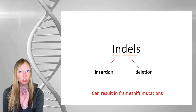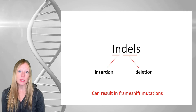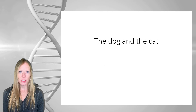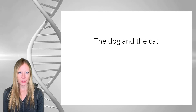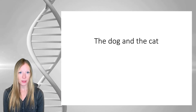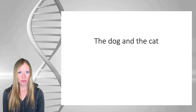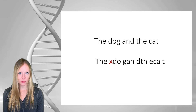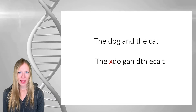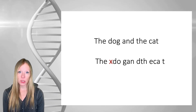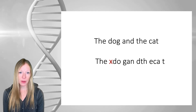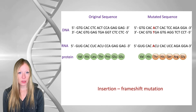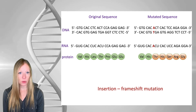A frameshift means that we shift the way the ribosome is reading the messenger RNA. Just as an example, let's look at this English phrase, which consists of words of three letters each. Remember, codons are three letters. 'The dog and the cat.' If I add a letter, but still I'm only looking at three-letter words, then the sentence looks like this — hard to read, right? And it's the same with our ribosome, which can only read codons, chunks of three bases at a time. So if we make an insertion, we are now making something completely different because we have changed the reading frame.